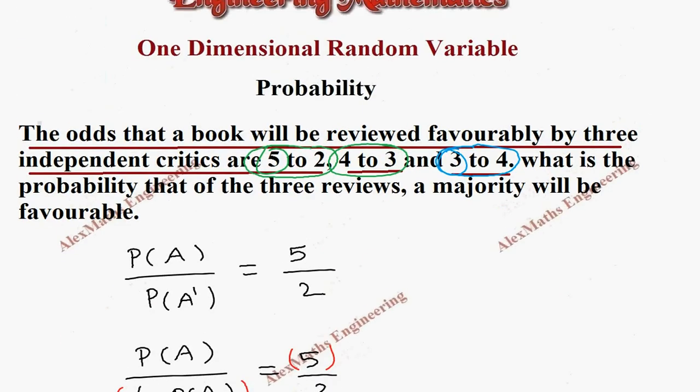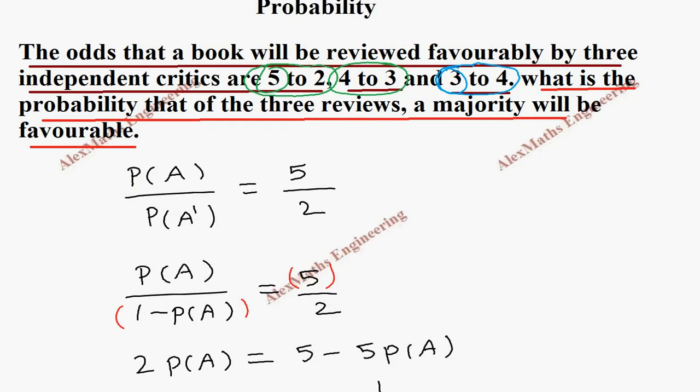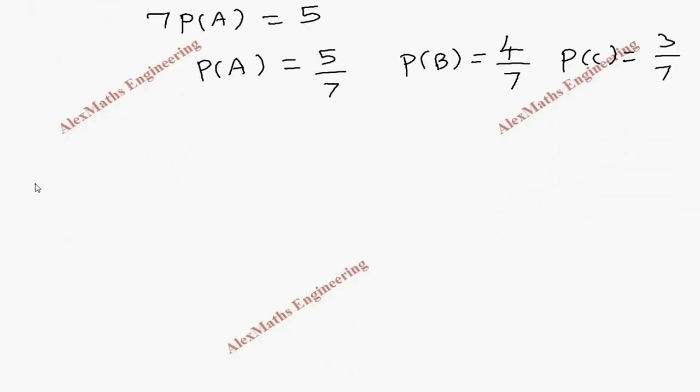Now the question: what is the probability that of the three reviews, a majority will be favorable? So out of three, majority is favorable means two or more than two.